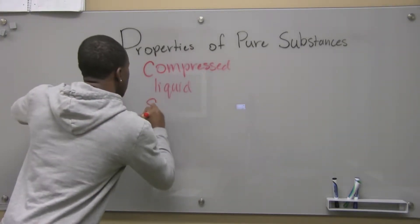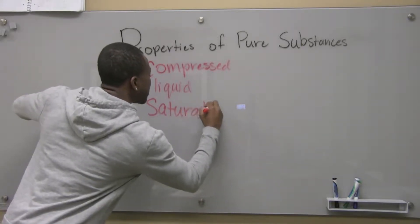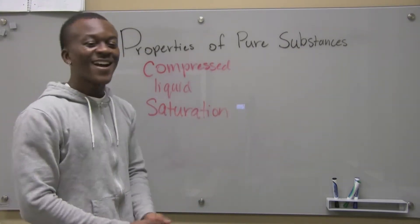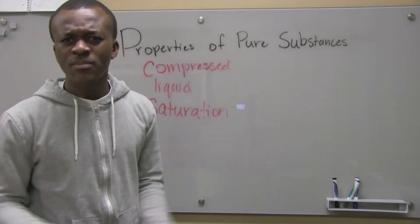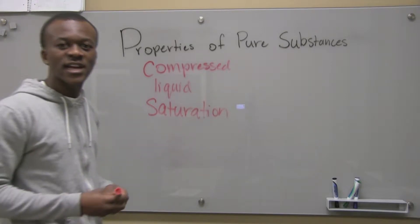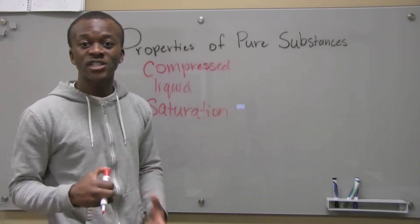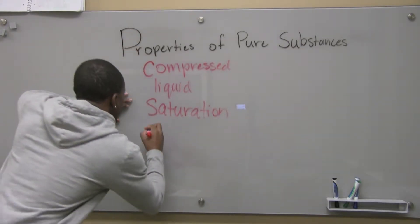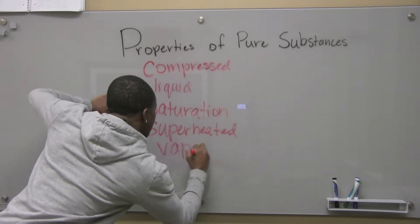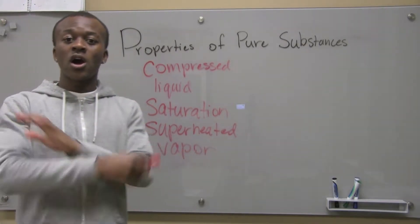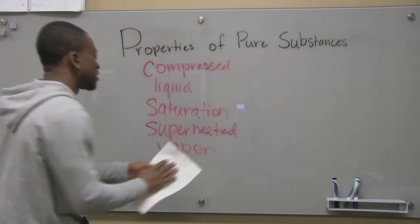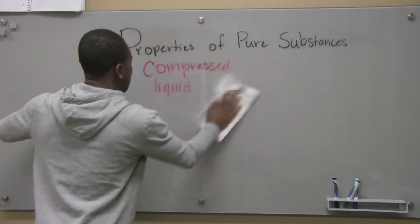That brings me to the term saturation. When I say something is undergoing saturation, I'm talking about boiling — like when we boil water in a kettle and it turns into steam. In saturation, we're going to find that we have more than one phase going on sometimes. If I talk about a superheated vapor, I'm talking about a substance that has completely undergone boiling and finished boiling — it's completely a gas, an everyday gas that we know.